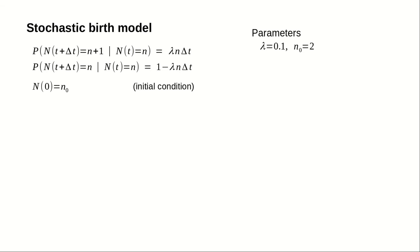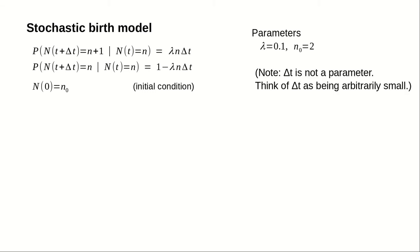Let's give them values so we can look at the simulations. We'll let lambda equal 0.2 and n0 equal 2. It might look like delta t is a parameter, but it's really just an abstract quantity used to define the model. Think of delta t as being arbitrarily small — the equations have to hold for any sufficiently small interval delta t.